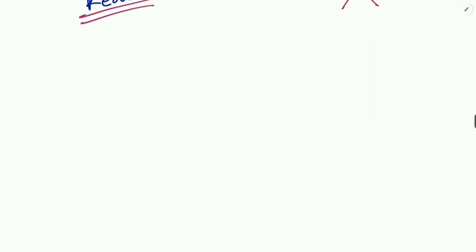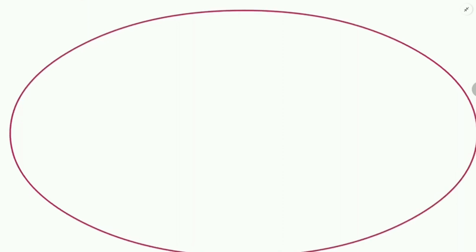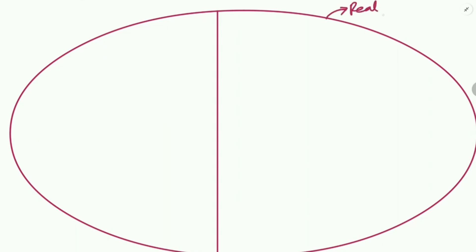First of all, I'd like to draw an ellipse — I hope you know what an ellipse is from geometry. I've drawn a large ellipse on my screen. I want to divide this ellipse into exactly equal halves. This whole ellipse represents real numbers. A real number can be divided into two different kinds: rational numbers and irrational numbers.